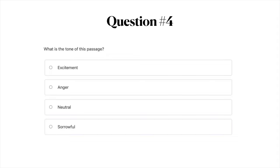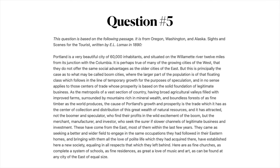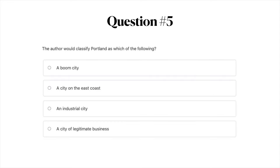Question number five. Go ahead and pause the video to read this passage. The author would classify Portland as which of the following? A: a boom city; B: a city on the east coast; C: an industrial city; or D: a city of legitimate business.